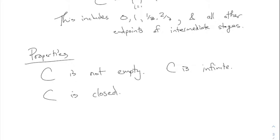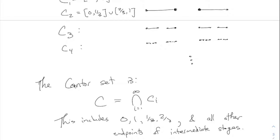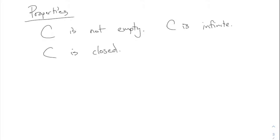It's a non-empty, infinite, closed set. What about countable or uncountable? If the endpoints were the only points in the Cantor set, then every element would be rational. But it turns out the Cantor set is in fact uncountable — its cardinality is the size of R, not Q. Let me explain why.